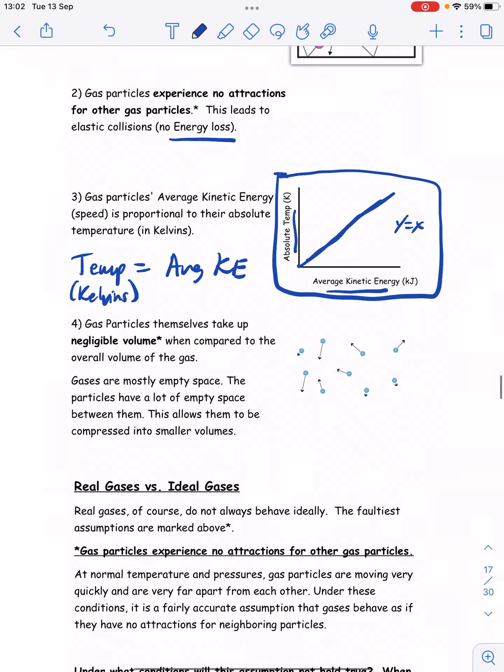And lastly, we assume that gas particles themselves take up negligible volume when compared to the overall volume of the gas. So that means that gases are mostly empty space as opposed to liquids or solids which have basically no empty space in between their particles. And so since the particles are so far apart from one another, their volume in and of itself is basically so small we can ignore it.